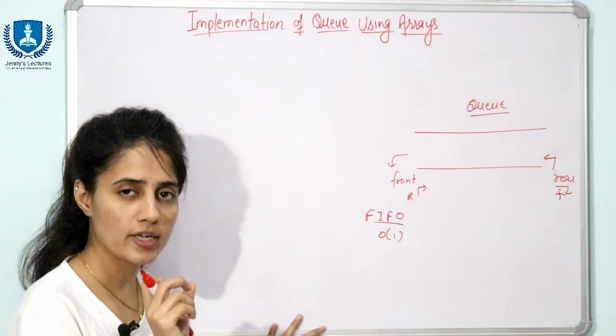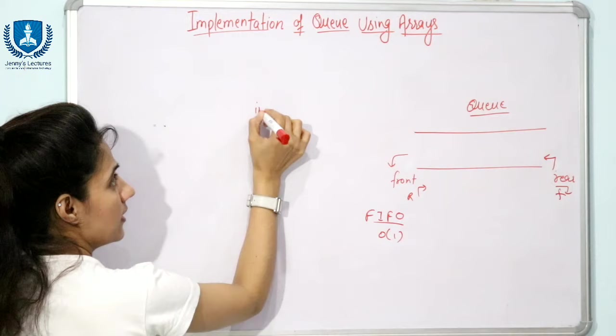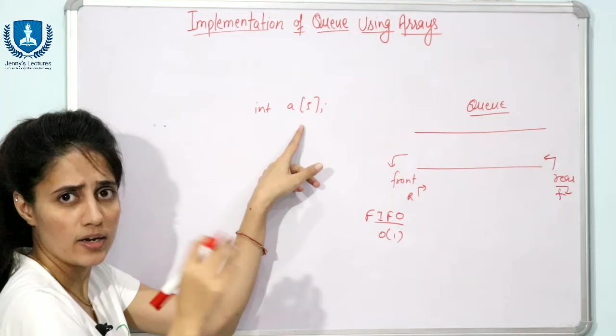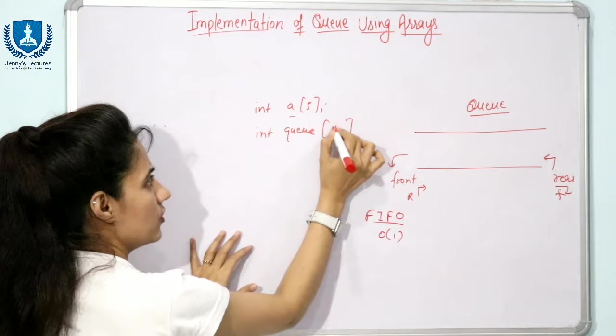Now we will implement the queue using arrays. To declare an array: int array_name[size], where size can be any constant like 5, 10, 50, or 100. I am naming the array 'queue' since I am implementing a queue. The size will be specified. I am using a macro definition: #define N 5, so wherever N is used in the program, it will be replaced by 5.